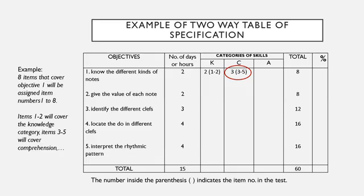So we have here an example of a two-way table of specifications which outlines the categories of skills, the number of items for each objective, and the percentage of items for each objective. That ends our discussion about the two-way table of specification, and here is the reference. Thank you very much — if you like this video, kindly click the like or thumbs up button, and you may also subscribe to this channel for more future videos. Thank you very much, and stay safe!